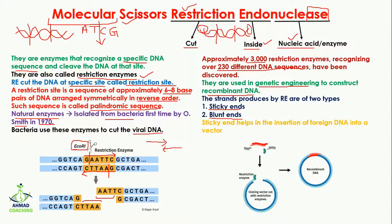In sticky ends, the nucleotides are free and can easily stick with other new nucleotides or with other DNA. In the case of blunt ends, no sticky ends are produced — if the enzyme cuts straight through, you will not have any free nucleotides, and this is called a blunt end.